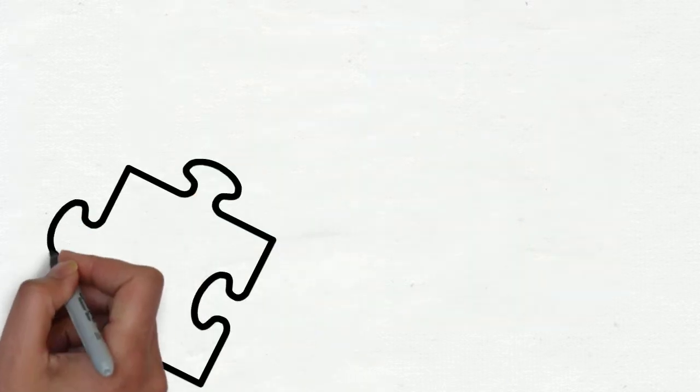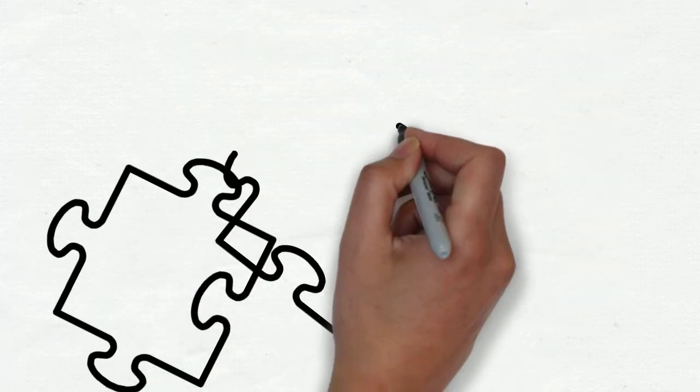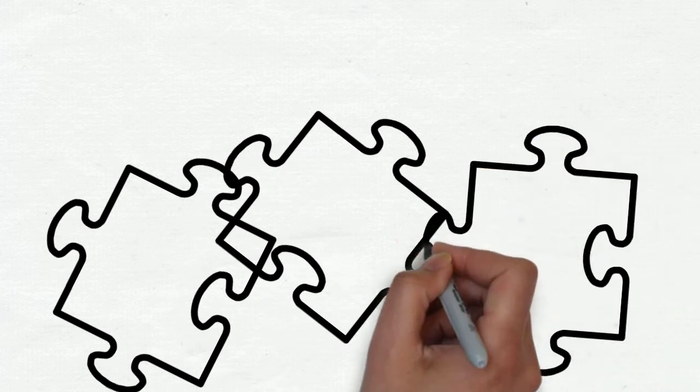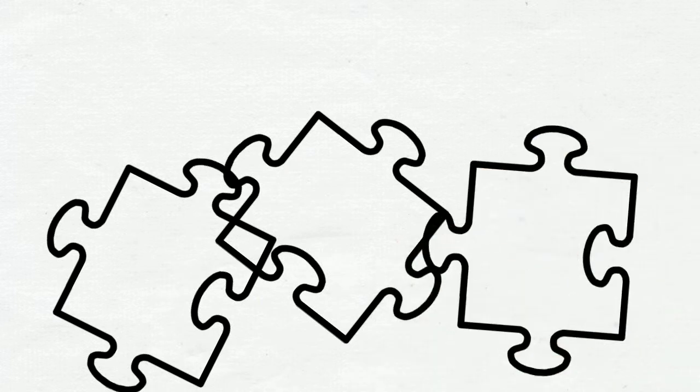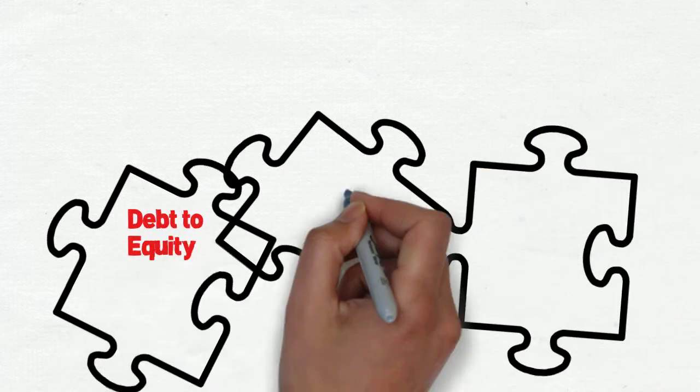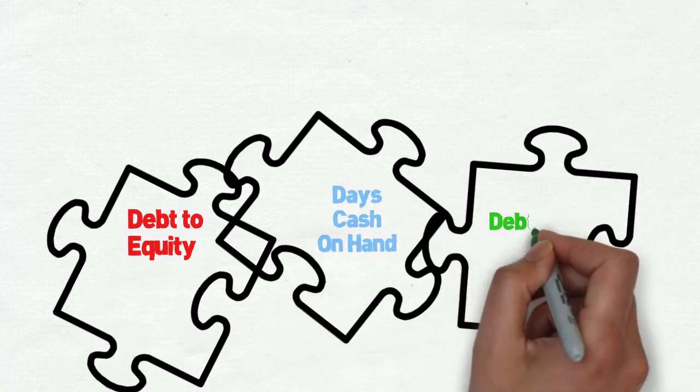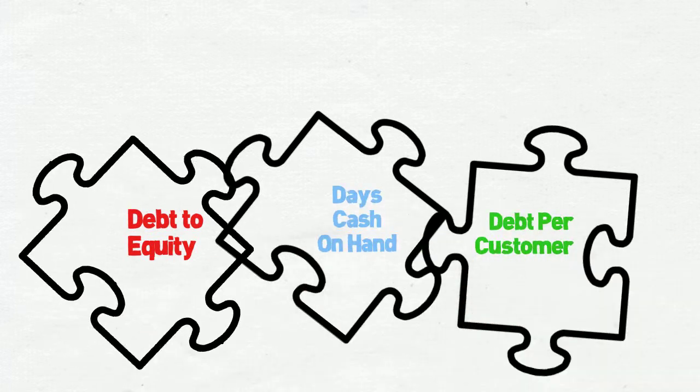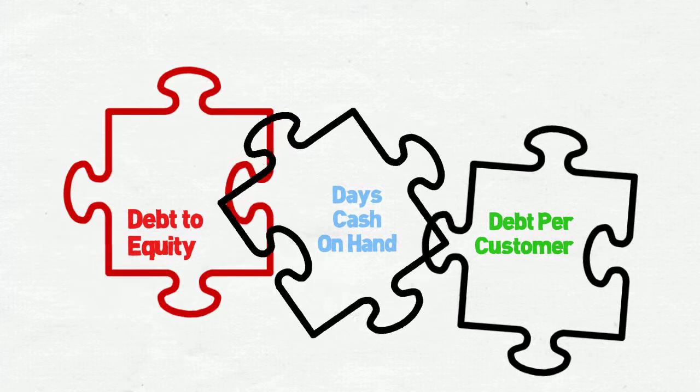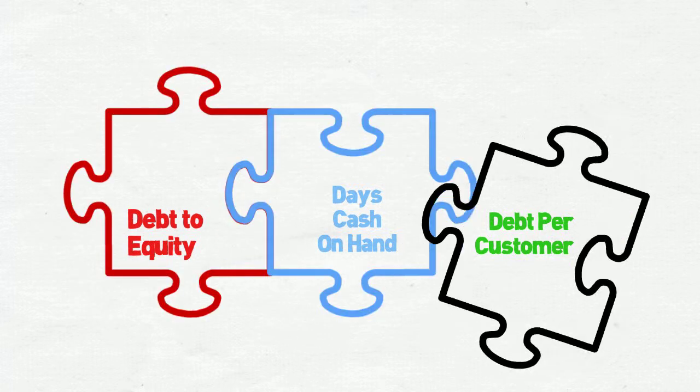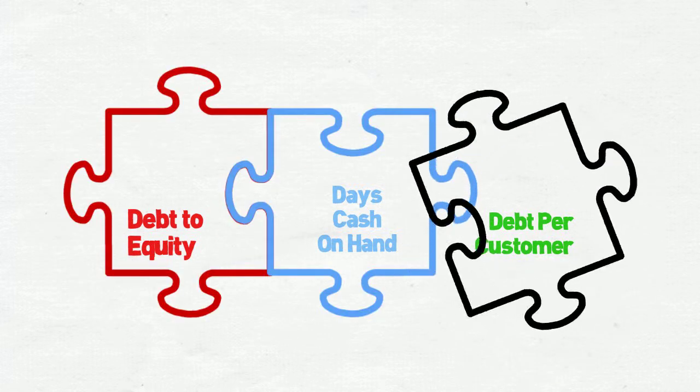Quantitatively, credit rating agencies measure the financial position of an individual water utility against many financial ratios, such as debt-to-equity, days of cash on hand, and long-term debt per customer. Each of the credit rating agencies may give slightly different weight to each of these considerations, and so there can be some variation in the ratings.